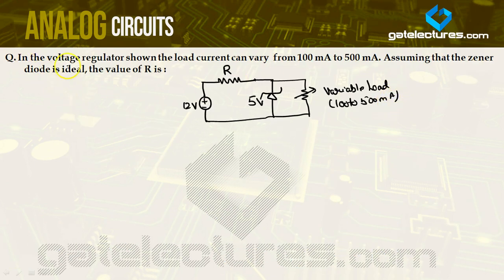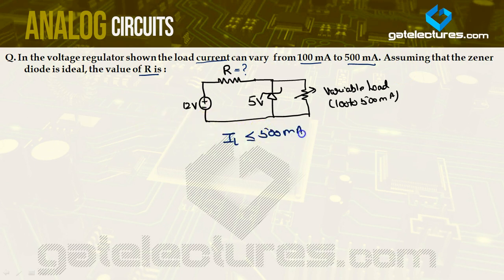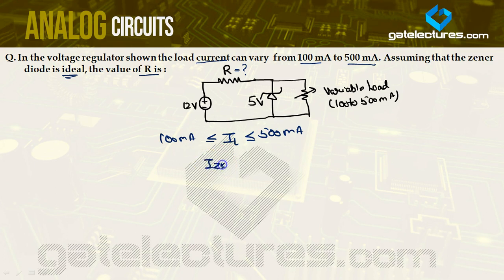Next question: In the voltage regulator shown, the load current can vary from 100 milliampere to 500 milliampere. Assuming the Zener diode is ideal, find the value of R. Since the diode is ideal, we assume the knee current IZ(min) = 0 milliampere and Rz = 0. IS = (12 − 5) / R = 7/R.